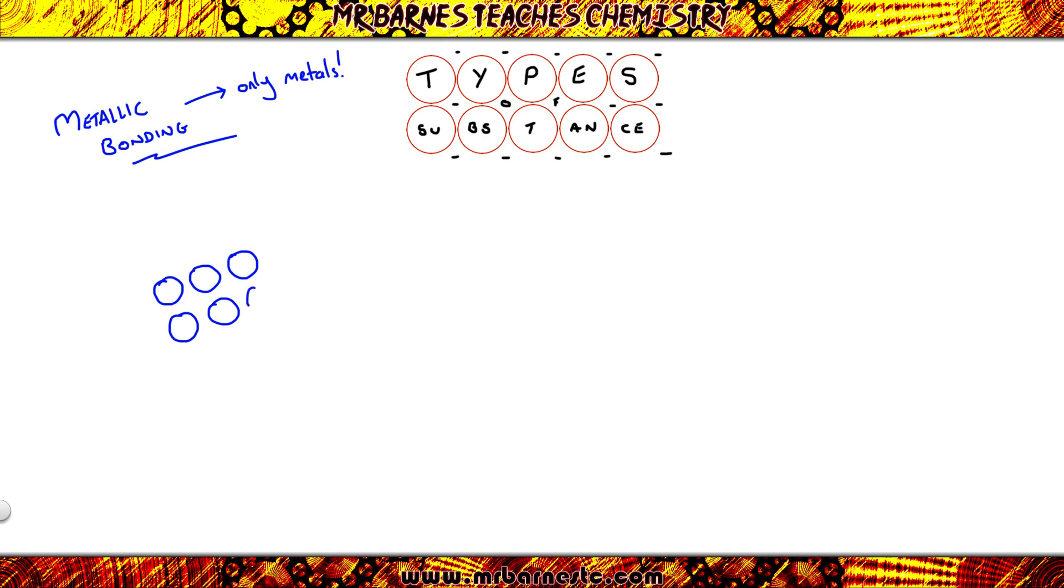As you can see here I've got my metal atoms and they have your positive nucleus. Now when the electrons become delocalized that positive nucleus resembles a cation. So you have a positive cation surrounded by a sea of delocalized electrons. Delocalized meaning they're free to move.